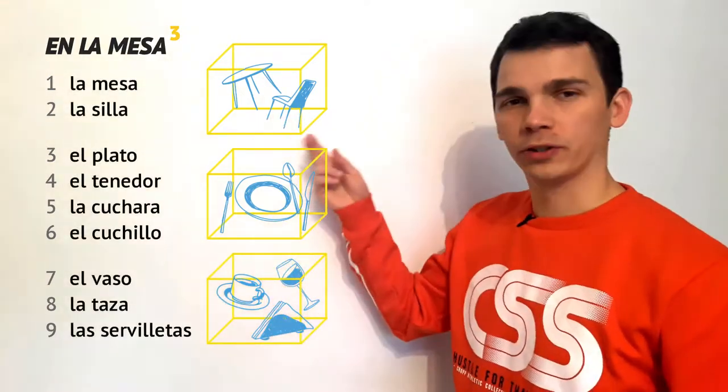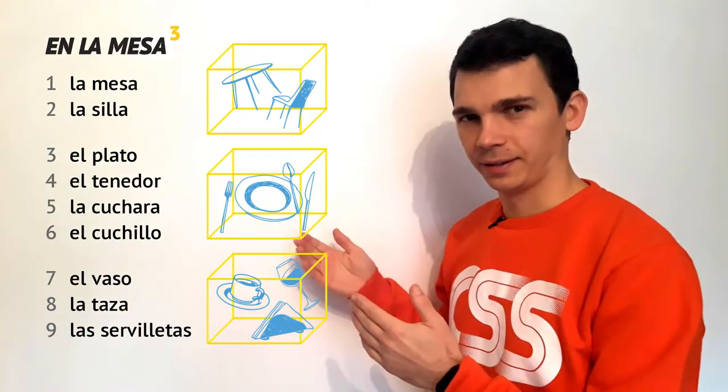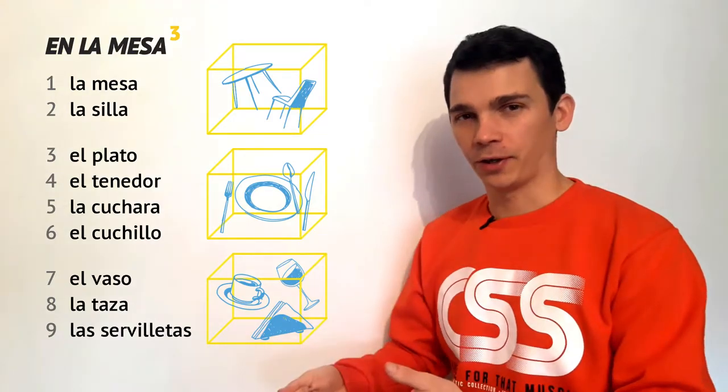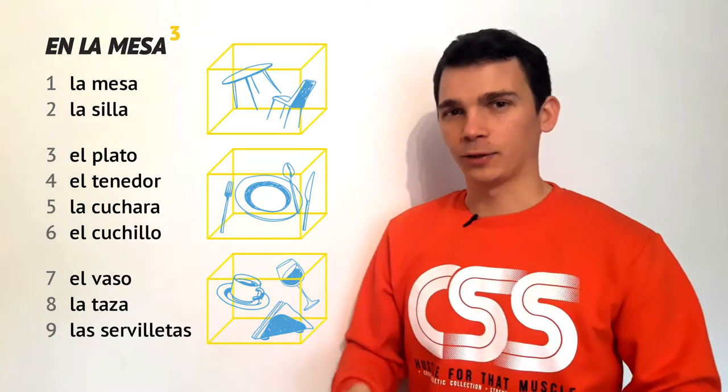First two words are la mesa, la silla. Then four objects: el plato, el tenedor, la cuchara, el cuchillo.